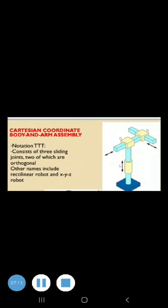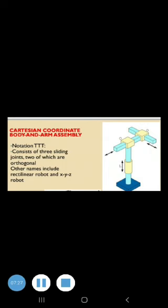The third type is Cartesian coordinate robot. The other name for this configuration includes rectilinear robot and XYZ robot. It is composed of three sliding joints, two of which are orthogonal. Next type is jointed arm robot.